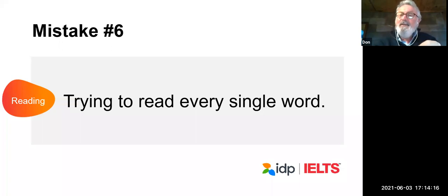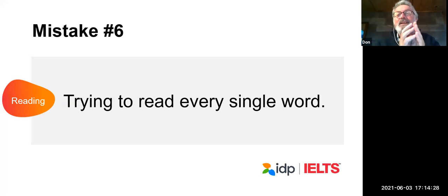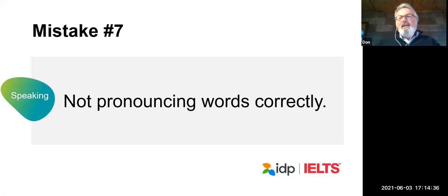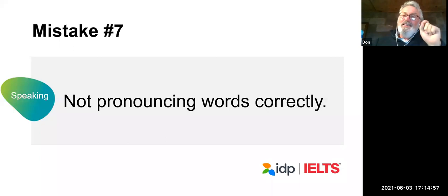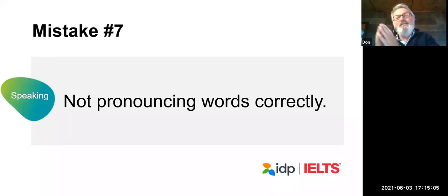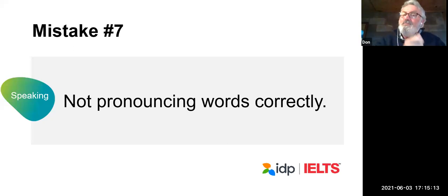We've had six mistakes so far, and we have 13 to go. This next one sounds obvious: in speaking, people are not pronouncing their words correctly. Everybody knows it's hard to pronounce a foreign language correctly, but you would be surprised that many people whose first language is not English seem not to practice the English sounds that don't exist in their language. For example, if your first language is Arabic, you may say 'buh' instead of 'puh.' People and people with a B are different words.